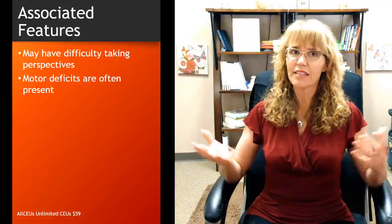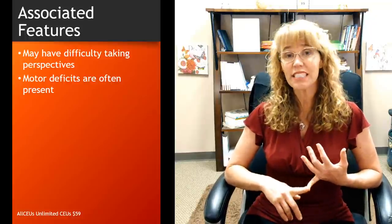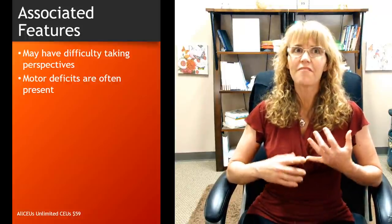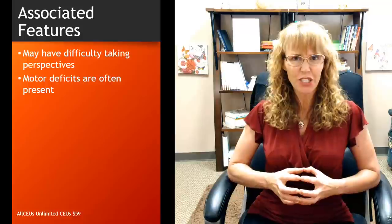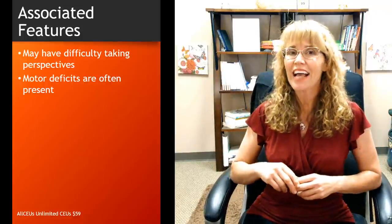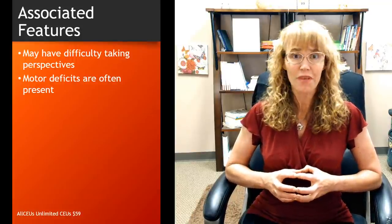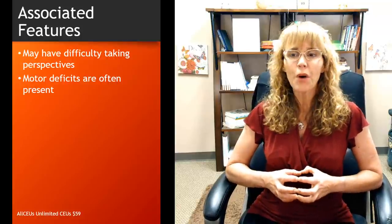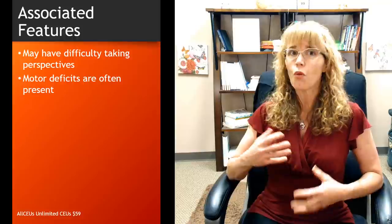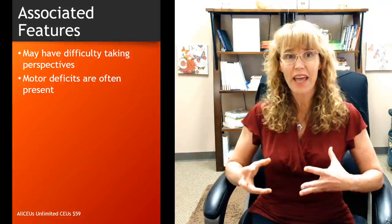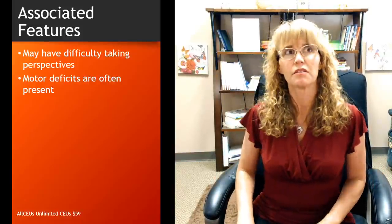Associated features noted in the DSM include difficulty taking the perspectives of others — stepping outside their own head to view things from someone else's viewpoint. This isn't intentional narcissism or refusal to empathize; it may simply not be possible. Motor deficits are also often present — whether in walking or throwing — and some people on the spectrum walk on their tiptoes rather than heel-to-toe.